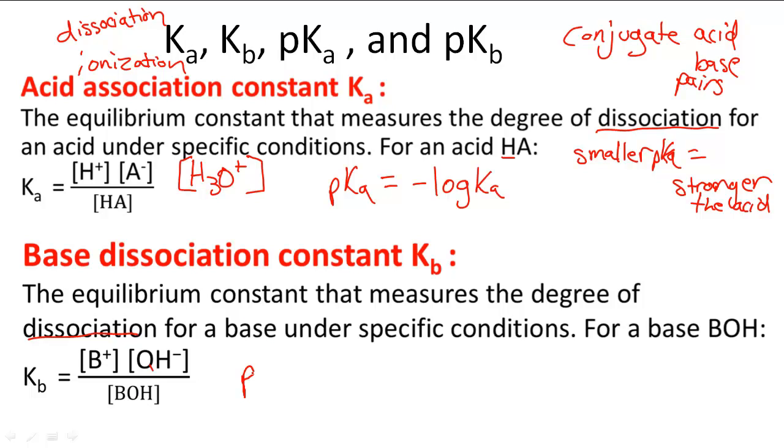We can use pKa as well, and that's going to give us information about the base being strong or weak. pKb equals negative log of Kb. This is telling us that if it has a smaller pKb, then the stronger the base.